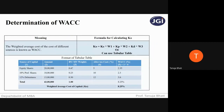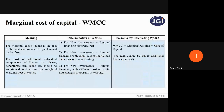With equity at 10 lakhs and debentures at 5 lakhs, total marginal capital = 15 lakhs. Marginal weights: equity = 10/15 = 0.67; debentures = 5/15 = 0.33. You take the cost, multiply by marginal weights, and you will get the weighted marginal cost of capital.